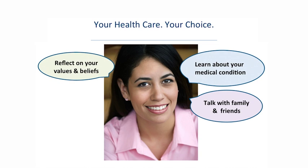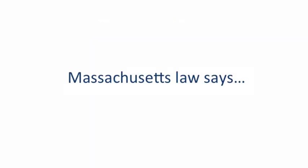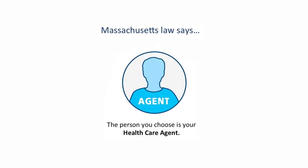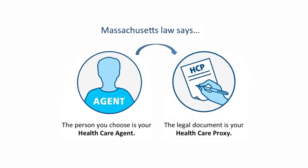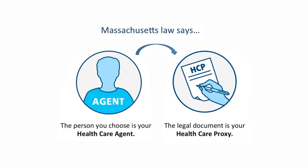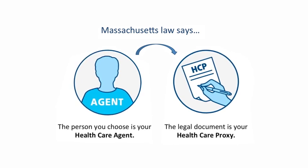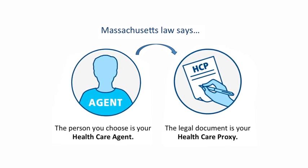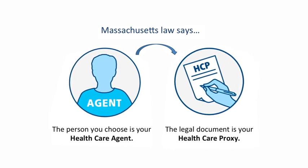One of the first decisions you may want to make is choosing a healthcare agent in a healthcare proxy. Massachusetts law makes this easy to understand. The person you choose is called your healthcare agent, or your agent for short. You give your agent the power to make decisions in a legal document called a healthcare proxy. So your agent is the person, and your proxy is the document. In Massachusetts, this is how we pass our very powerful right to make decisions to another person — your healthcare agent. That means your family member or a spouse doesn't automatically have this powerful decision-making right unless you appoint them as your healthcare agent in a healthcare proxy.